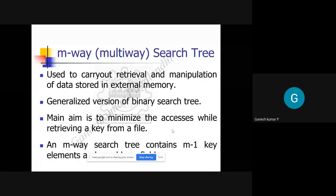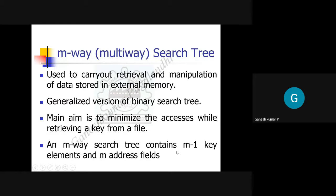The topic is the M-way Search Tree. At the beginning of the lecture, we said we are going to study many types of tree data structures. The majority of tree data structures deal with data management with respect to internal memory, that is RAM. But there are certain data structures like B-tree, B+ tree, M-way Search Tree, splay tree, and red-black tree that are dealt with data management with respect to external memory.